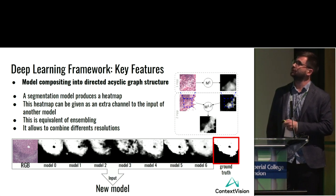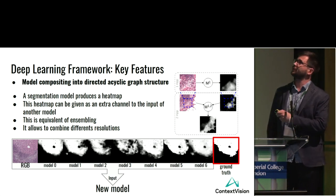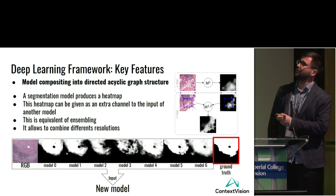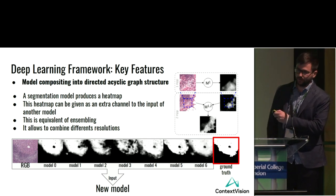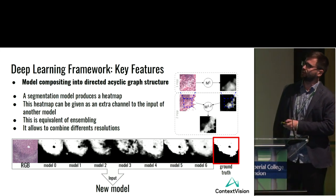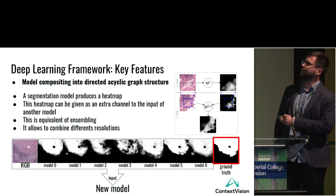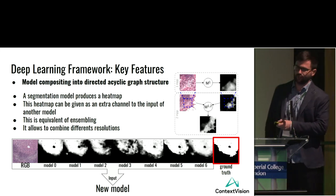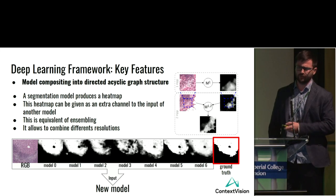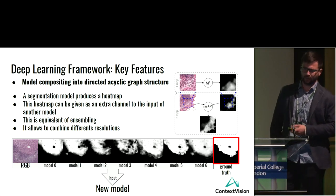The second feature is composing models into a directed acyclic graph structure. We train a first model at one resolution — say one micrometer per pixel — predict on training data, then train another model at a different resolution — say two micrometers per pixel — using predictions from the first model as an additional input channel. Different models learn different things, and combining them is equivalent to ensembling while also allowing multi-resolution fusion.